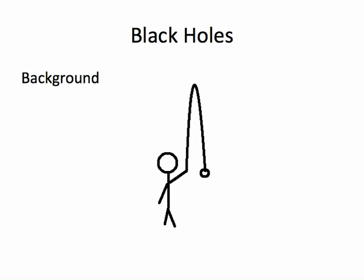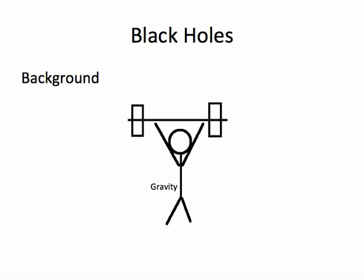So just some basic background. If you take a ball and you throw it into the air, it'll come back down. If you throw it faster, then it'll go higher. Theoretically, if you threw something fast enough, it would never come back down. And how fast you have to throw something in order to get it to never come back down depends on the strength of gravity. So the stronger the gravity, the faster you have to throw that object for it to never come back down.